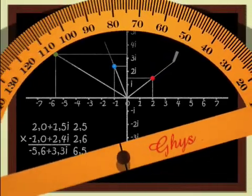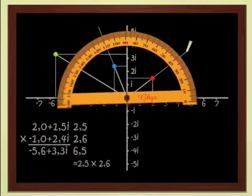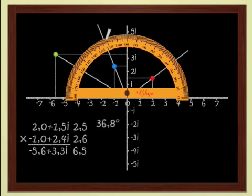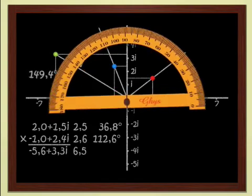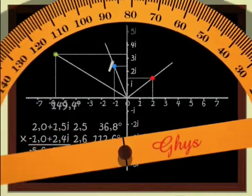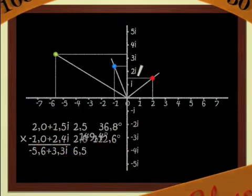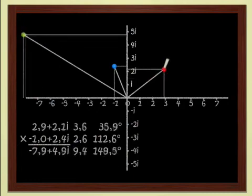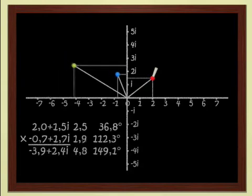The argument of a complex number is measured by the angle between the abscissa axis and the straight line joining the origin to the point. The argument of the red complex number is 36.8 degrees. The argument of the blue point is 112.6 degrees, and for the product — the green point — we get 149.4 degrees, that is, the sum of the arguments of the two numbers. When we multiply two complex numbers, moduli are multiplied and arguments are added.